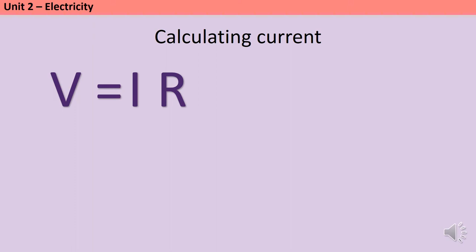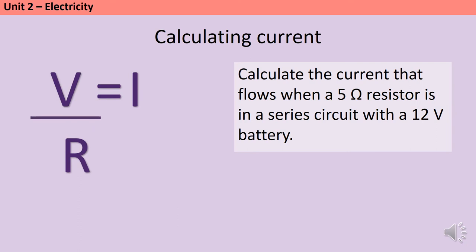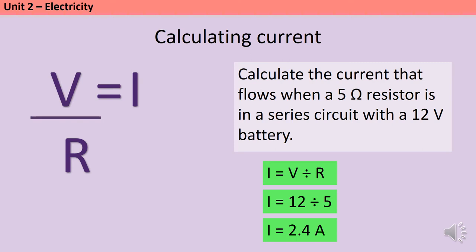We can go through the same process to make current the subject. At the moment current is multiplied by resistance, so to get rid of something that's multiplying we need to divide both sides by resistance. For example, calculate the current that flows when a 5 ohm resistor is in a series circuit with a 12 volt battery: I is V divided by R, so I is 12 divided by 5, giving a current of 2.4 amps.